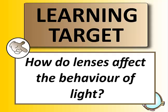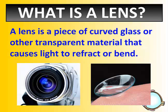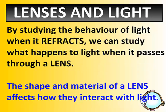How do lenses affect the behavior of light? Bill mentioned refraction in his video. So when we add a lens, the light will be bent depending on the type of lens we use and which direction it goes in. A lens is a piece of curved glass or other transparent material that causes light to refract or bend. Camera lenses, contact lenses, and the lens in your eye all bend or refract light.